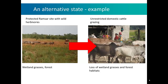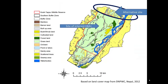A second example: a wetland in the southeast of Nepal which is currently a protected Ramsar site with wetland grasses, some forest areas, and is grazed by wild herbivores. The stakeholder participatory meeting decided that the alternative state would be unrestricted domestic cattle grazing, currently the greatest pressure on this reserve, which would lead to a loss of wetland grasses and forest habitats important for a number of birds and other species. Measurements were taken at the site of interest and also in the northern buffer zone where there was a great deal of cattle grazing.